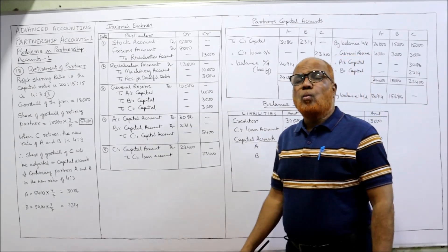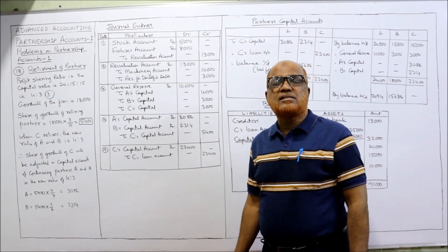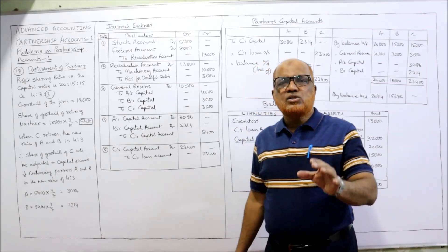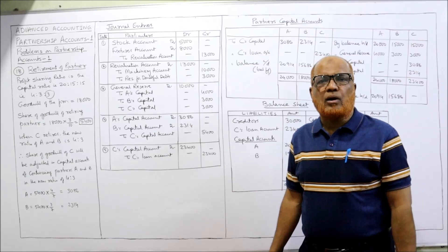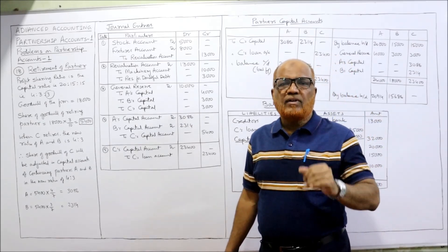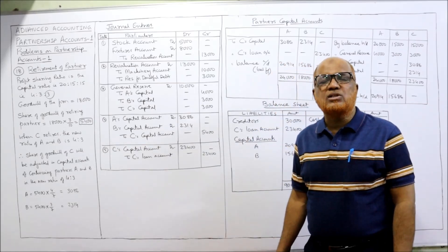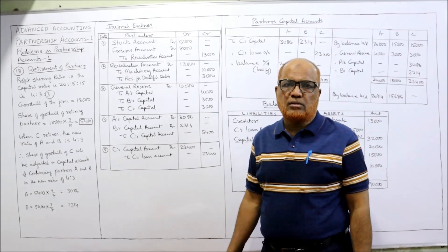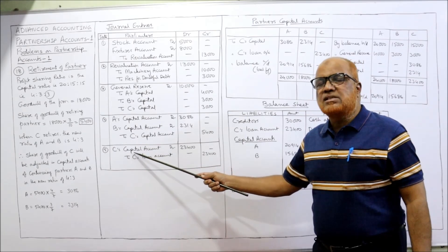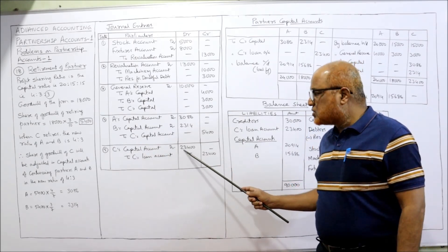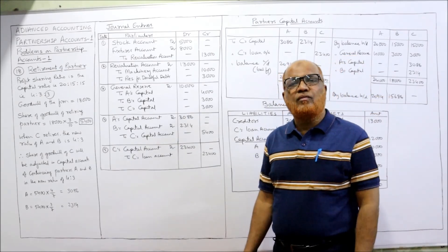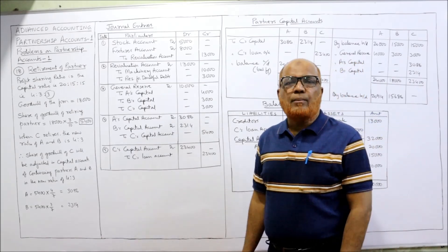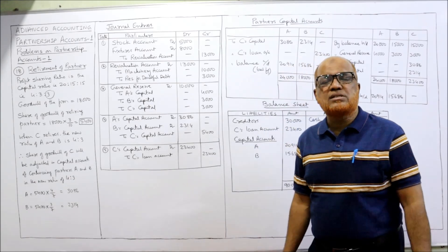The last entry: whatever amount is due to retiring partner C will be transferred to his loan account. He is no longer a partner, so the amount should not be kept in the capital account. The entry will be C's capital account debit to C's loan account 23,400. We arrive at 23,400 by preparing the capital account. Narration: being the amount due to retiring partner transferred to his loan account.